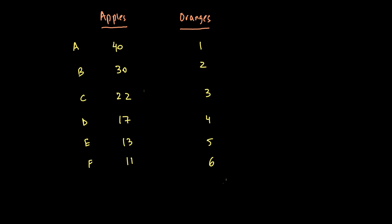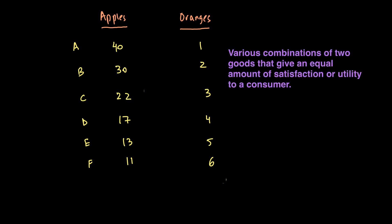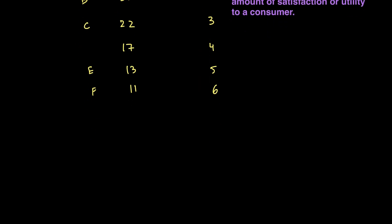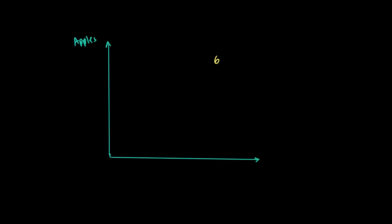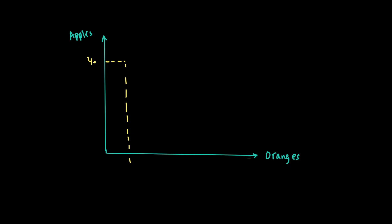From this table, we can now draw the indifference curve for this individual, which shows all the various combinations of two goods that give an equal amount of satisfaction to this consumer. With apples on the y-axis and oranges on the x-axis, we can plot the values: 40 and 1, then 30 and 2, then 22 and 3, and so forth.